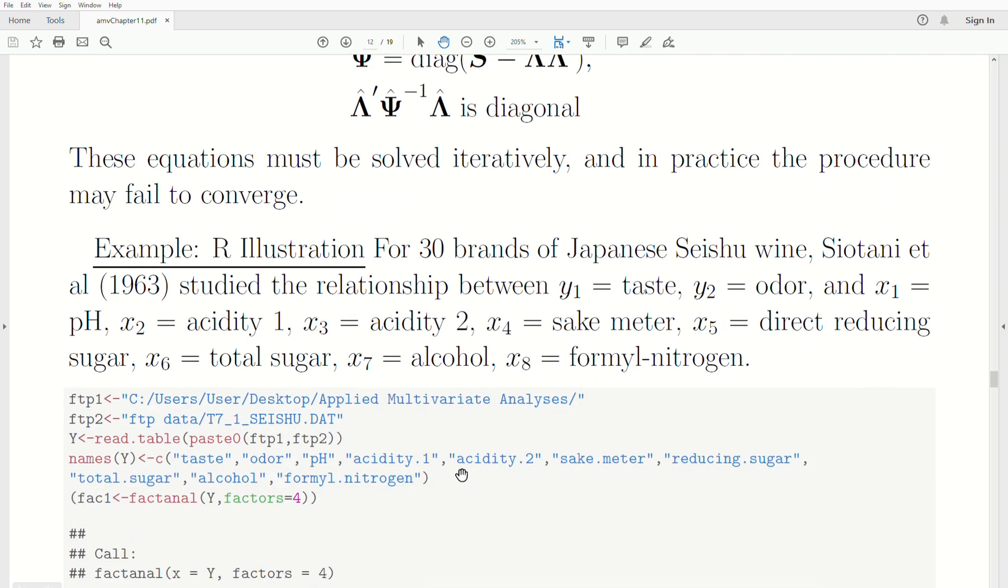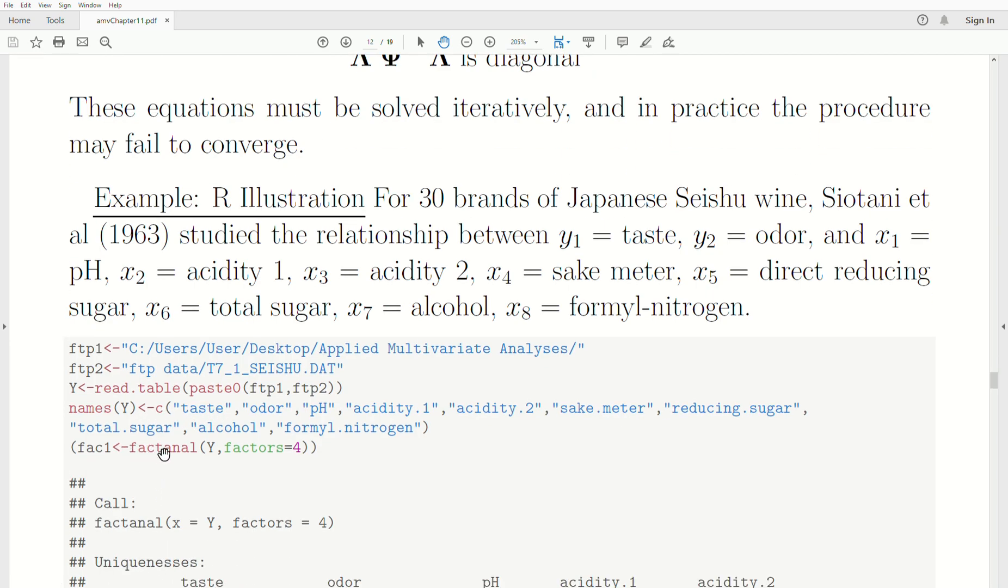We read the data in, name the columns, and this is it. This is the function, Factor Analysis Model 1. We put in our data frame and then how many factors we want, and it produces it. I store it to a variable FACT1, Factor Analysis Model 1.